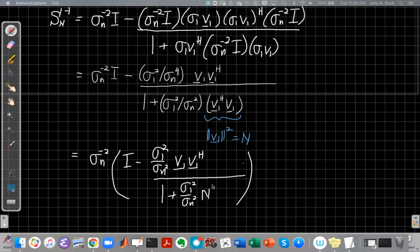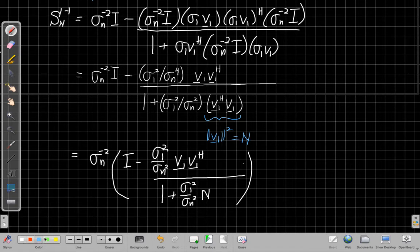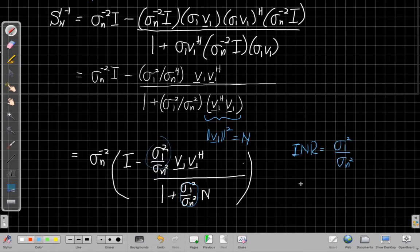I could also pull this sigma n to the minus 2 out front, and I would end up with very similar terms here. So let me put this n in and pull the sigma n squared out front. I see I have this very similar term appearing in both the numerator and the denominator that is the ratio of the interferer power to the noise power. And so I'm going to define the variable to be that. We're going to call that the interferer to noise ratio INR, so that's sigma 1 squared over sigma n squared. And then I'm going to multiply the numerator term here by n over n.